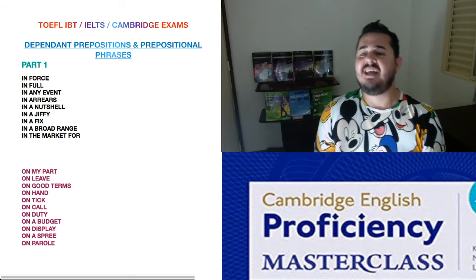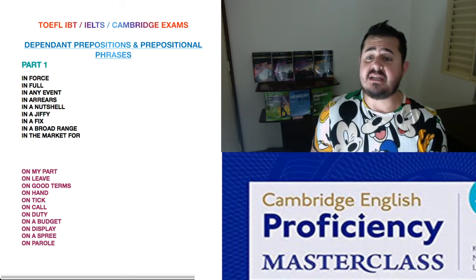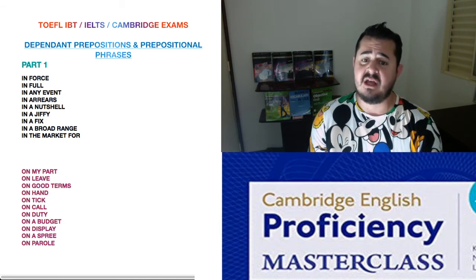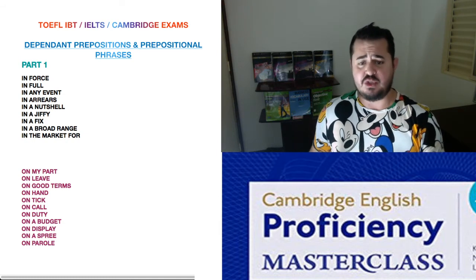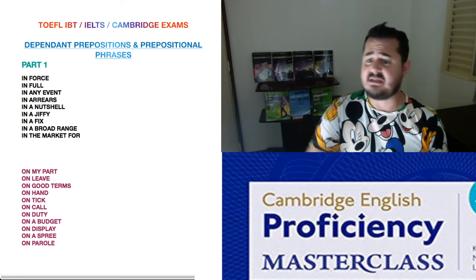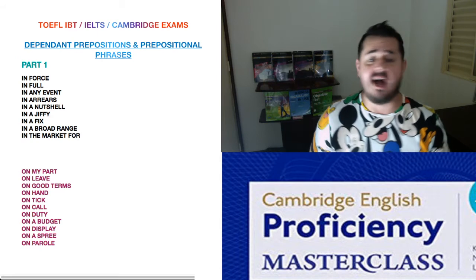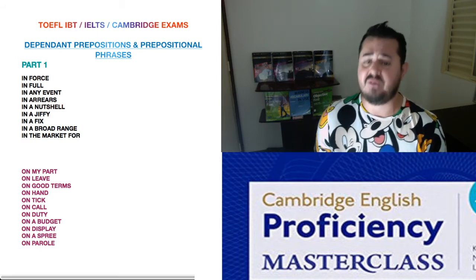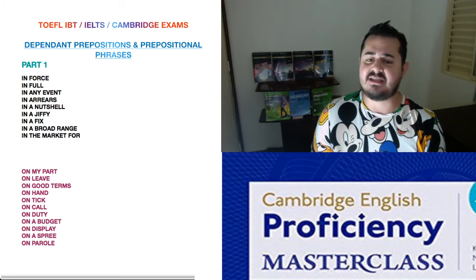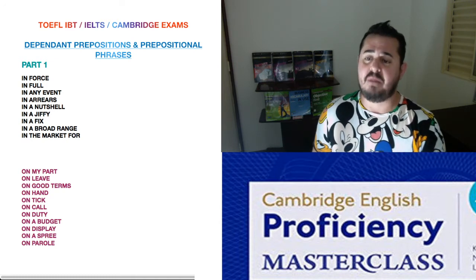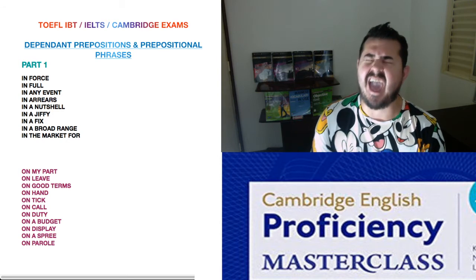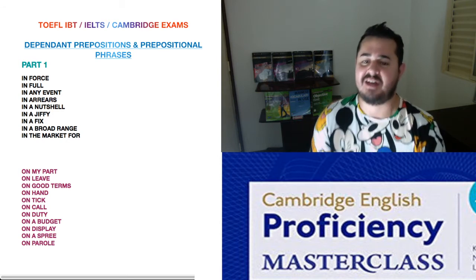'On a budget' means you haven't got much money available to spend. The money you have is only to pay for basic bills such as water, electricity, or rent — but you haven't got any money to buy ice cream or extra stuff. That's the meaning of being on a budget: not much money available.